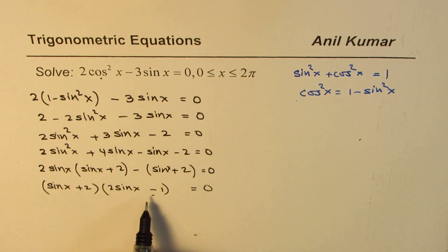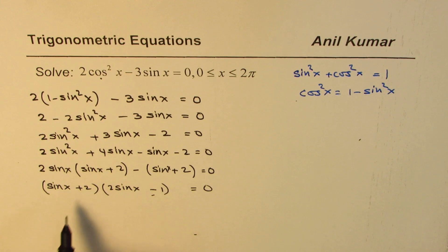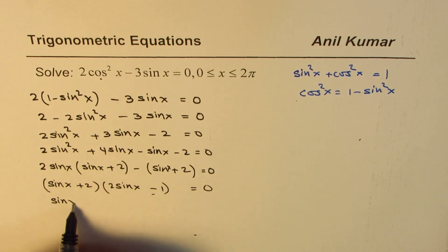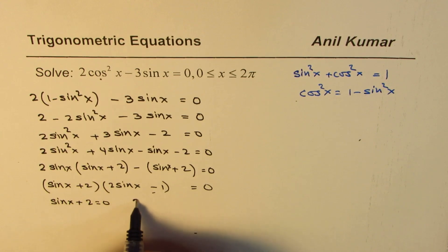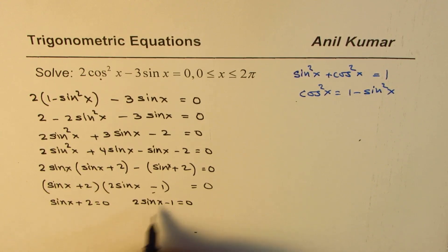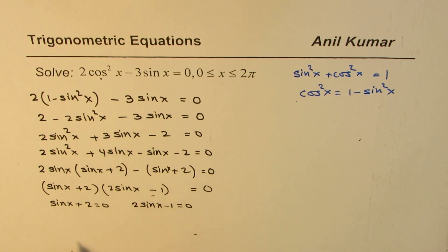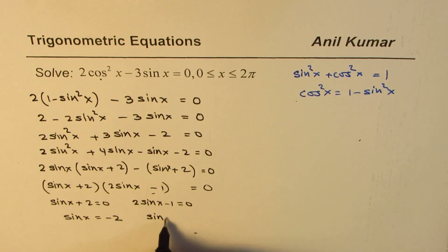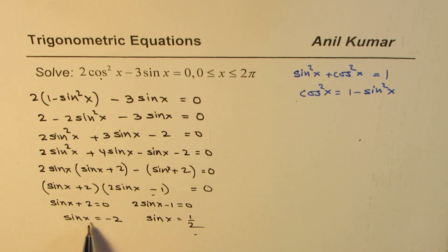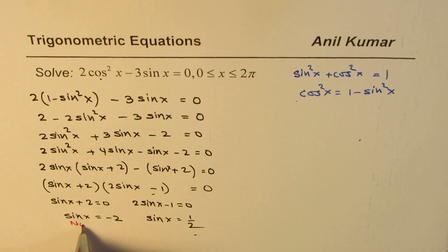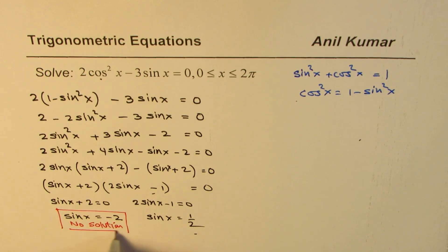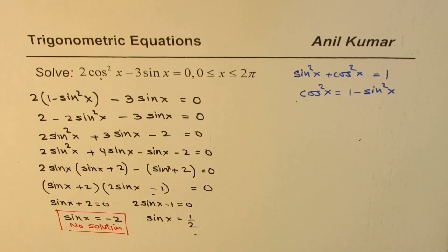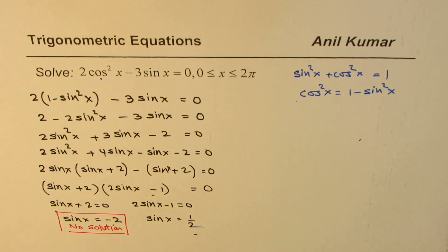We get (2sinx minus 1)(sinx + 2) equals 0, giving us two possible factors which could be zero. One of them is sinx + 2 = 0, giving sinx = negative 2. The other is 2sinx minus 1 = 0, giving sinx = 1/2. Since sine x has values between plus and minus 1, sinx = negative 2 has no solution, as the range for sinx is between plus and minus 1.